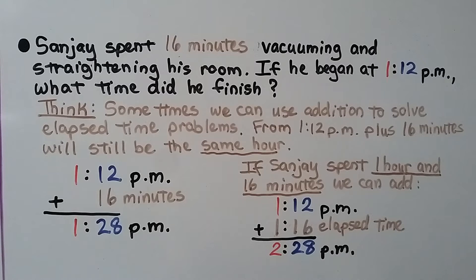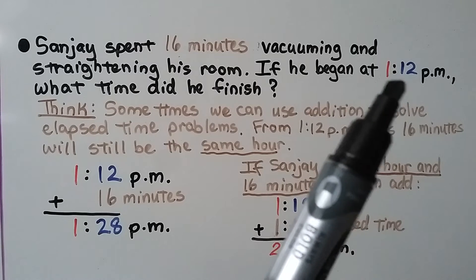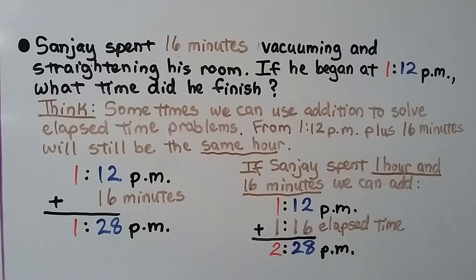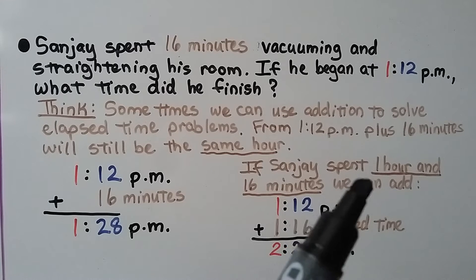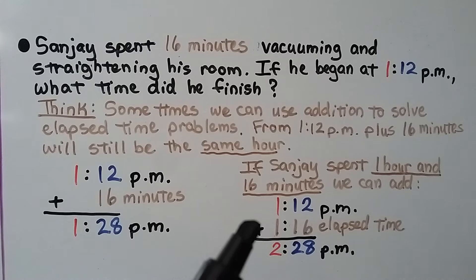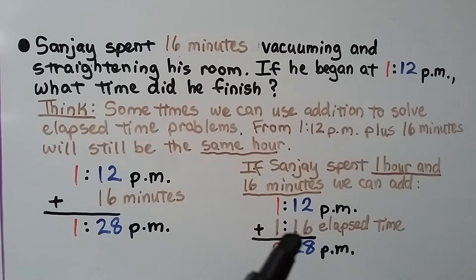Sanjay spent 16 minutes vacuuming and straightening his room. If he began at 1:12 p.m., what time did he finish? The elapsed time is 16 minutes and we know his start time. Sometimes we can use addition to solve elapsed time problems. From 1:12 p.m. plus 16 minutes will still be the same hour since we're only adding a few minutes — that gives us 1:28 p.m. If Sanjay had spent 1 hour and 16 minutes, we'd add that to 1:12 p.m. to get 2:28 p.m.